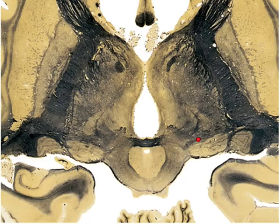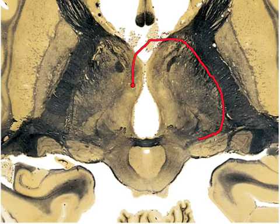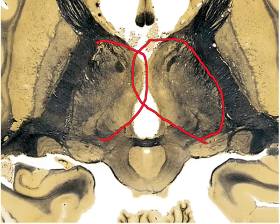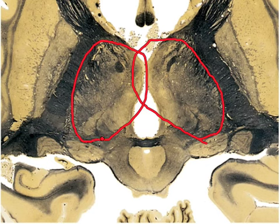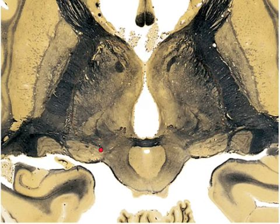Right here we have the thalamus, and I also have one over here on this side — a variety of different nuclei. We have the MGN, the medial geniculate nucleus, which is involved in sound.